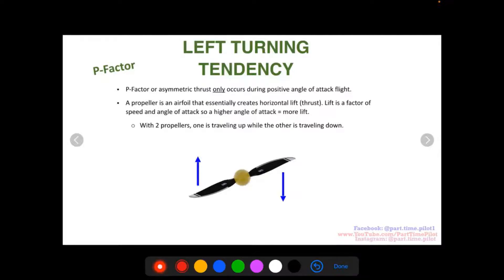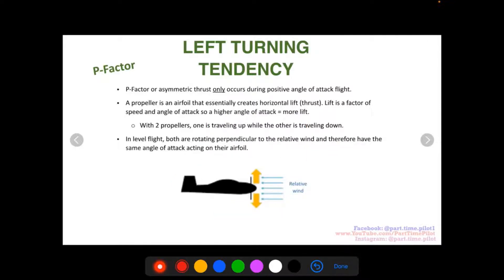And with two propellers, one is going to be traveling up while the other is traveling down. So if we are sitting in the aircraft right here, facing out, so this is our windshield, and we see our propellers, the right side in American general aviation aircraft is going to be traveling down to our eyes, and then the left side is going to be traveling up.